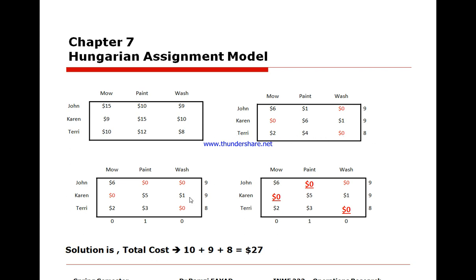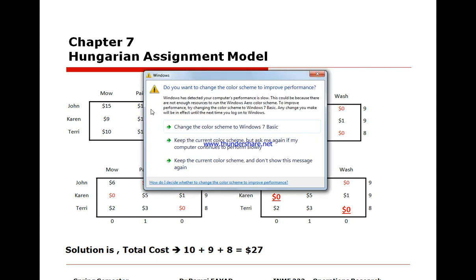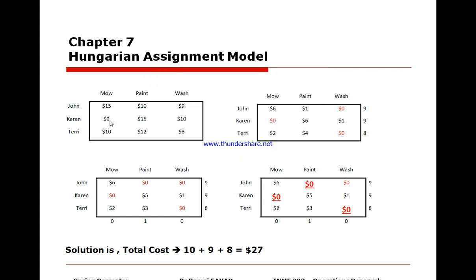We put the results in the reduced matrix and do the same for the columns — we find the minimum value in every single column and subtract it from each entry in that column. For the resulting zero entries, John has two entries both equal to zero, but we give priority to rows having only one zero entry. So Terry will do job 3 (washing), Karen will do job 1 (mowing), and John will do job 2 (painting). We pay Karen $9 for mowing, John $10 for painting, and Terry $8 for washing the cars.